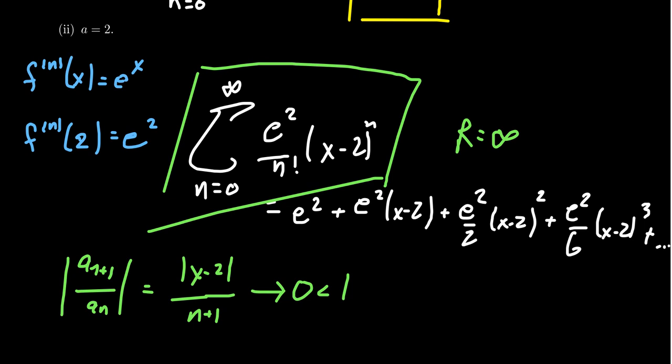This Taylor series centered at two likewise has an infinite radius of convergence, just like the Maclaurin series. There was nothing particularly special about choosing two — you could use any center and find the Taylor series for e to the x. What makes e to the x so nice is that its higher derivatives are predictable: e to the x is a function whose higher derivatives are always equal to the original function, giving it a well-behaved Taylor series.